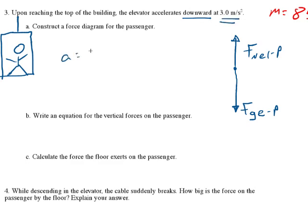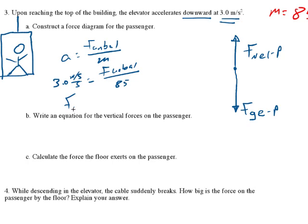We use acceleration equals force unbalanced over mass. We know mass is 85 kilograms. So 3.0 meters per second squared equals force unbalanced over 85. Force unbalanced equals what? 3 times 80 is 240, and 3 times 5 is 15. 240 plus 15 is 255 newtons.